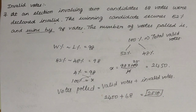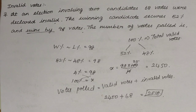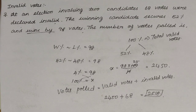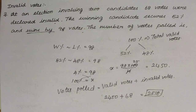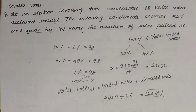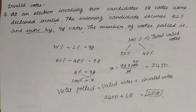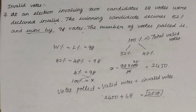The main concept: total votes includes both valid and invalid votes. Add them both together to get total votes. Since we know the invalid votes, add 68 to the valid votes to get the total number of votes.